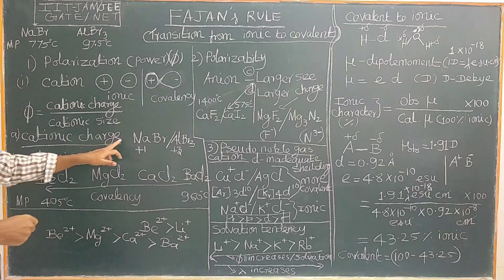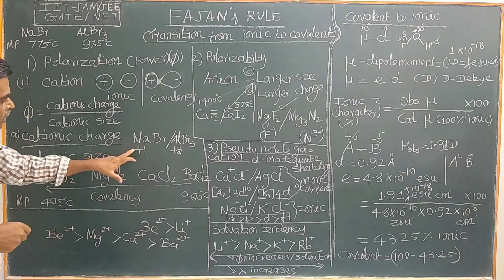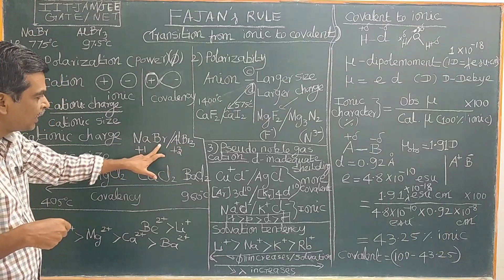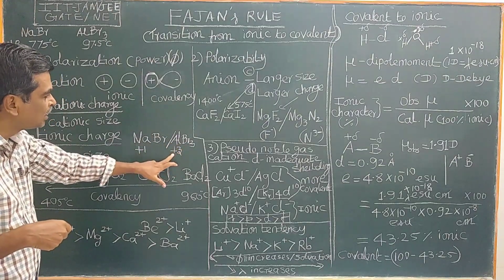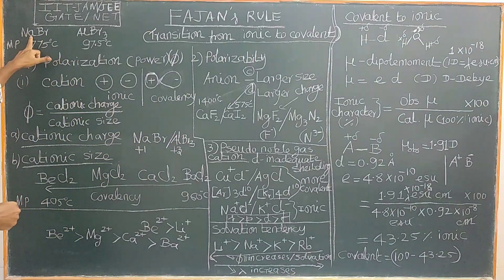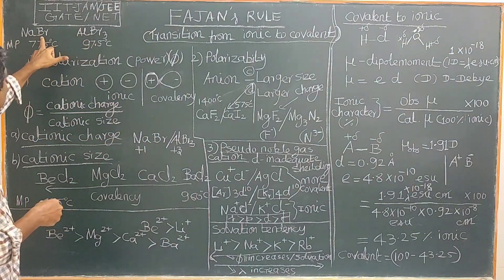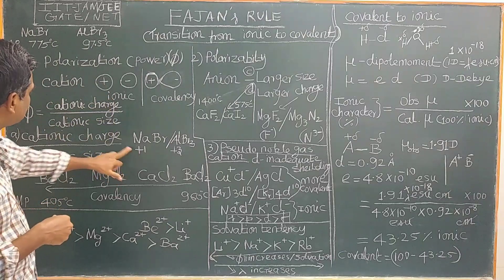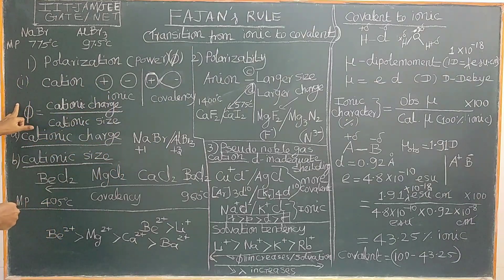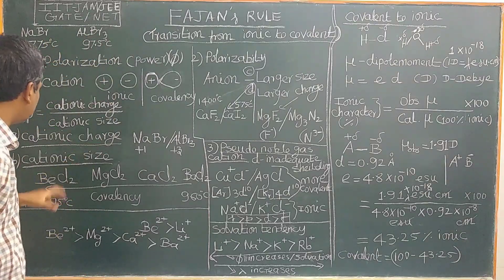Considering cationic charge: for sodium bromide, the cation charge is +1, while aluminium is +3 and the anion is the same in both cases. Because cationic charge is directly proportional to polarizing power, aluminium bromide is more covalent, while sodium bromide is more ionic due to its lower cationic charge.